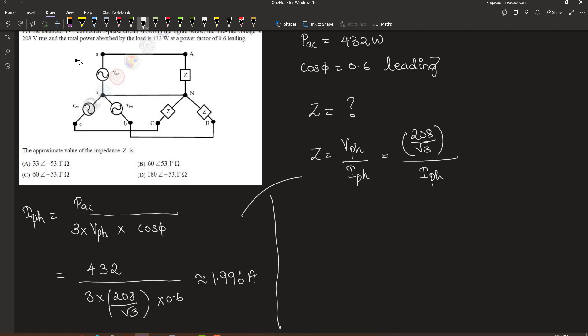Let us apply this here. The value of the impedance is equal to 208 divided by root 3, which is approximately 120.09, divided by the phase current. Therefore, the value of impedance will be 120.09 divided by 1.996. This is approximately equal to 60 Ohm.